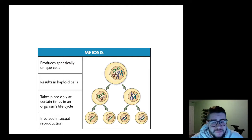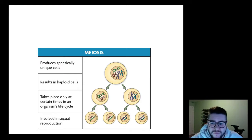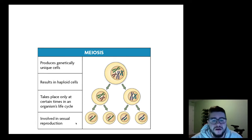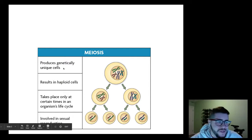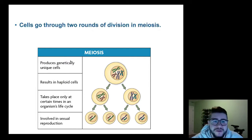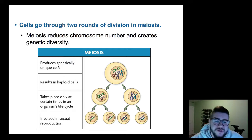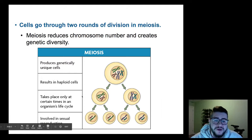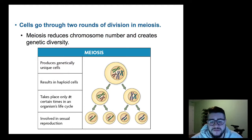Meiosis at its most basic form is kind of like when mitosis happens twice. If you remember mitosis, it starts with one cell that splits into two. Meiosis splits one more time, so each cell has half the number of chromosomes as the original starting cell. Some basic facts: it produces genetically unique cells — compare that to mitosis, which produces identical cells. The cells are haploid. Meiosis only takes place during a certain time of an organism's life, and these cells are used in sexual reproduction.